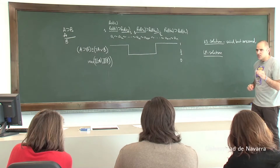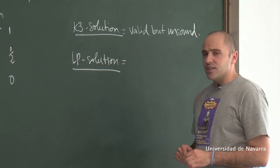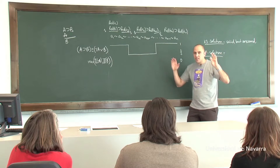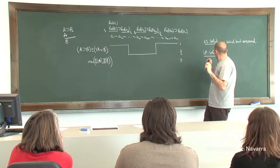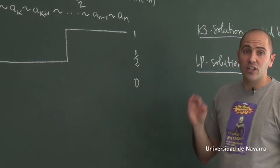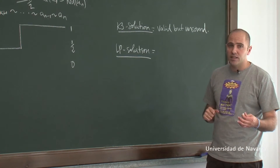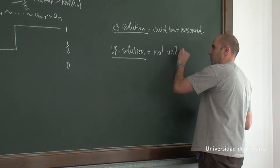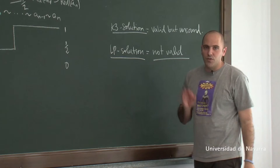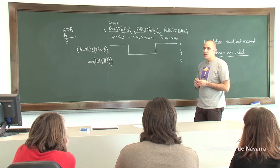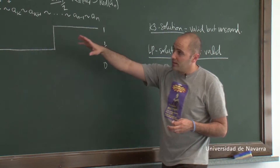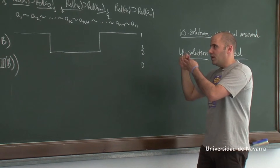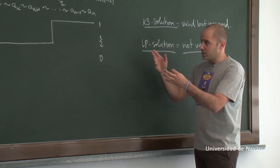The second solution is the LP solution. For LP standards, being true means taking a value more than zero. So for LP standards, all these conditionals are actually true. What happens in LP is that although all the premises are true, the reasoning in the paradox is not valid. As we showed in the previous video with the tableau for LP, this inference does not preserve tolerant truth. So for LP standards, all premises are true but the reasoning is not valid.